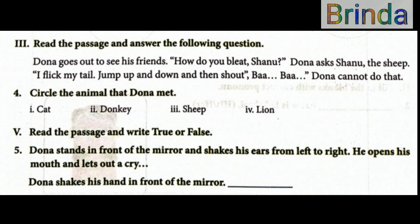Third Roman number children: read the passage and answer the following questions. So you have a passage — read it and then you can answer. Dona goes out to see his friends. How do you bleed, Shanu? Dona asks. Shanu, the sheep, says: I flick my tail up and down and then shout, Ba ba. Dona cannot do that. Go to mother.